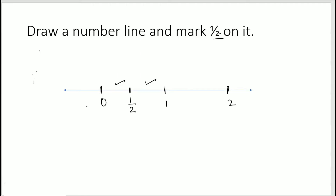Between 0 and 1 it is divided into two parts: one part, two parts, and this first part is one part out of two parts, so that's half. Now 0 can also be written as 0/2 — 0 by any number means the same thing. Similarly, 1 here can also be written as 2/2, because 2 ones are 2, so you get 1.